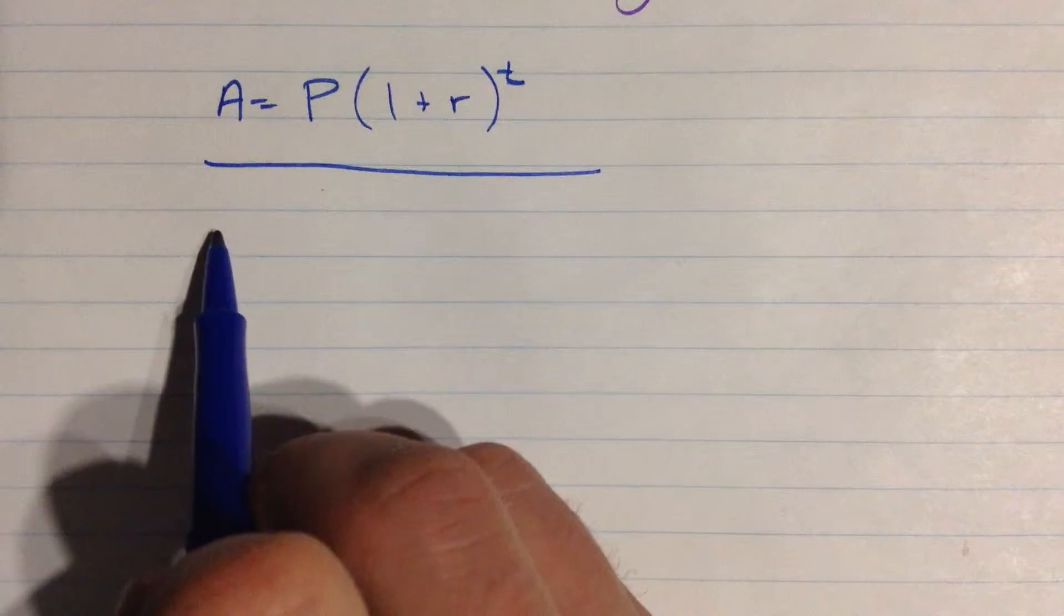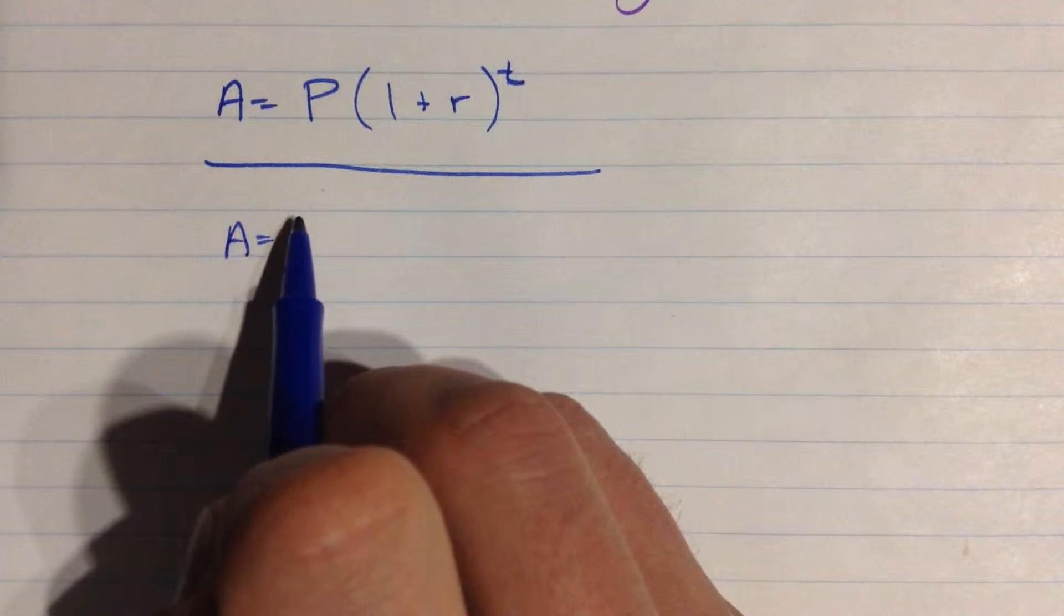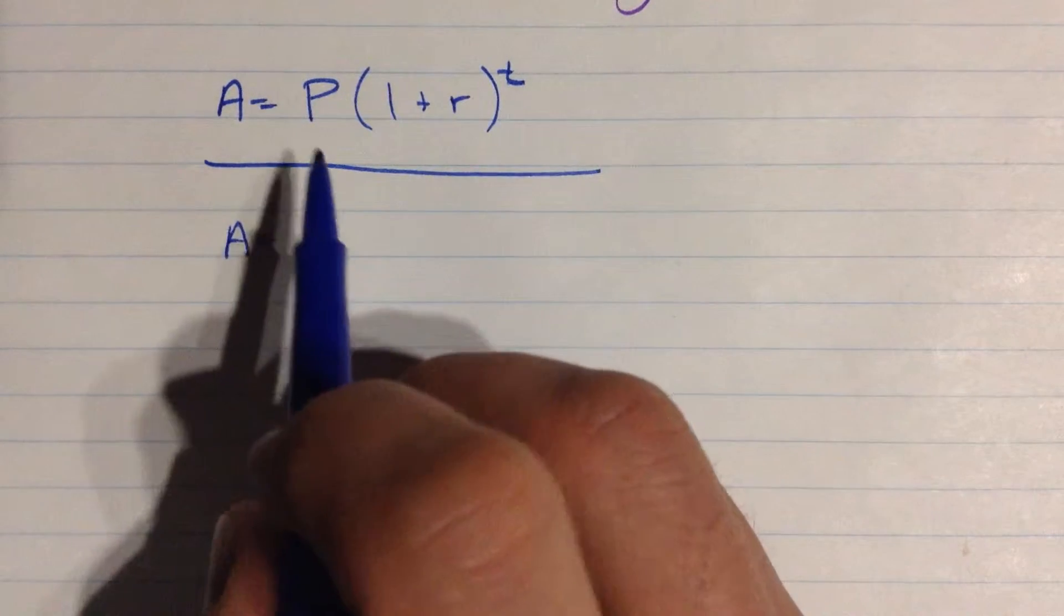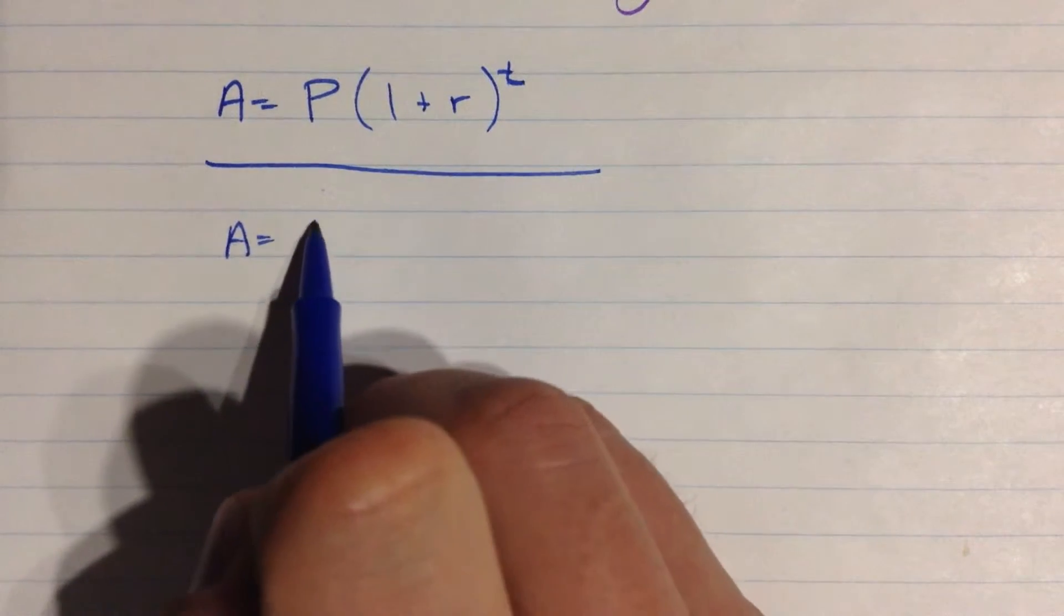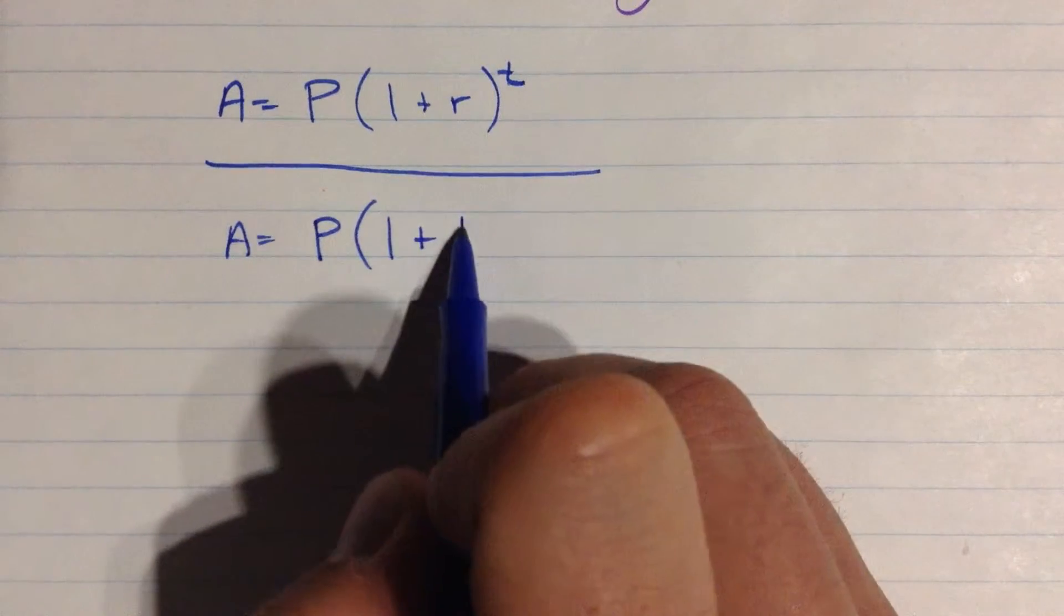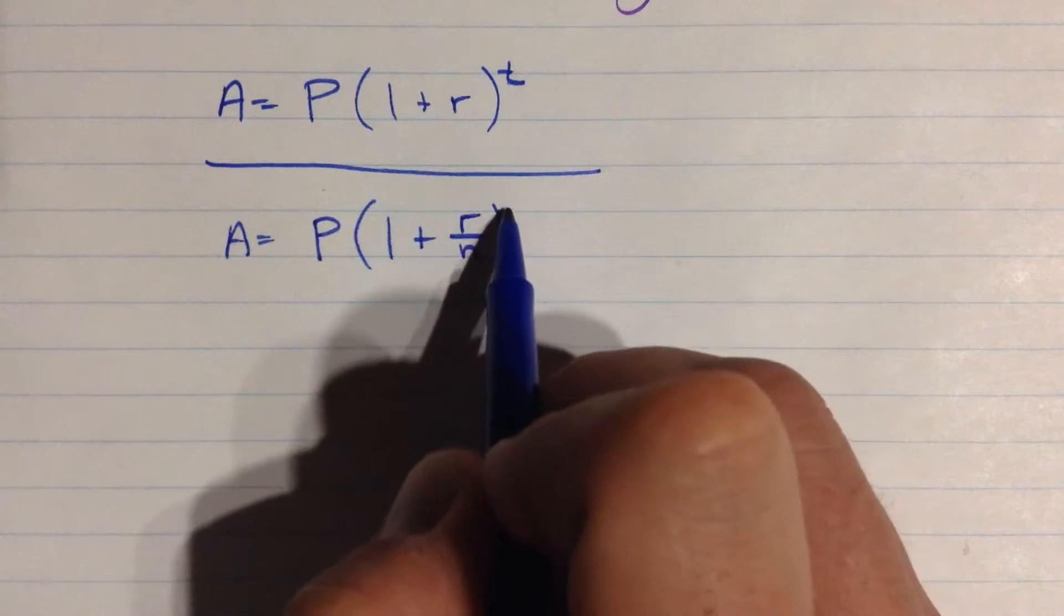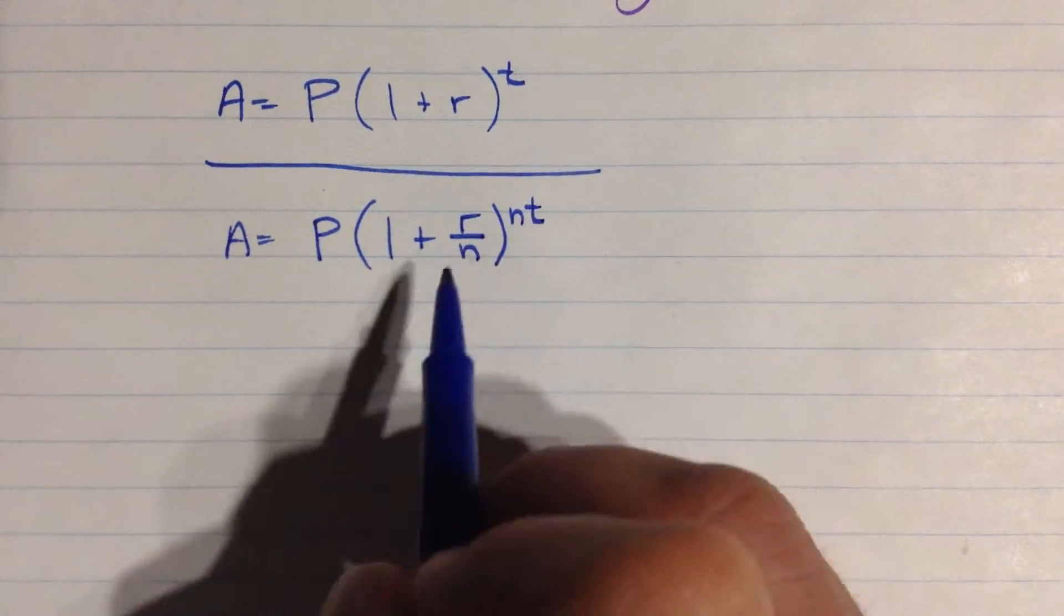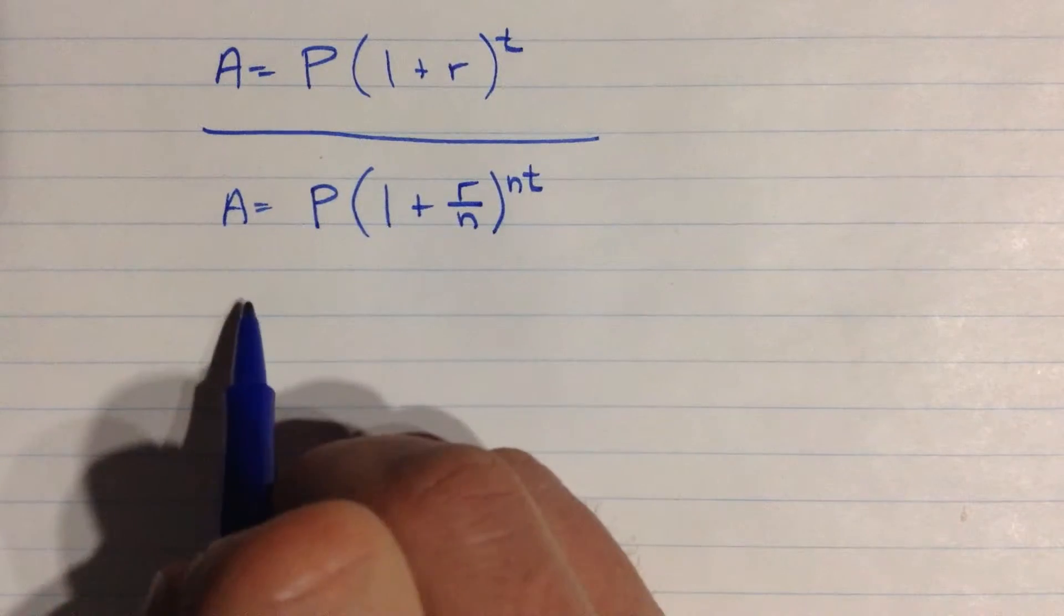But in real life, usually what happens is something slightly different. Usually what happens is the interest is compounded a little bit more frequently, although the rate is still listed as an annual rate. So this is the slightly modified version of this formula. Everything is the same except for rate here. We have an extra variable, n. And we put it in two places. So n is the number of compounding periods per year.